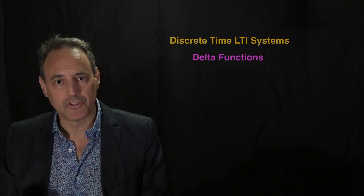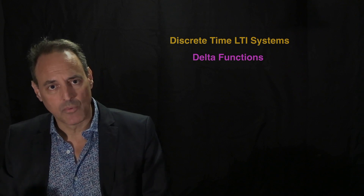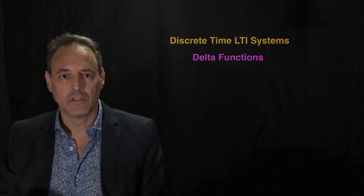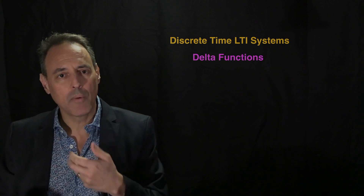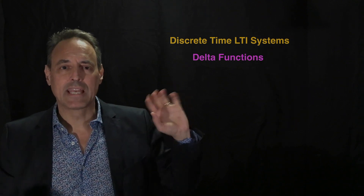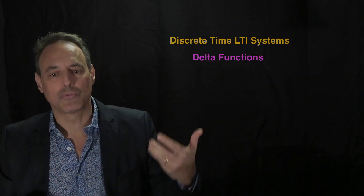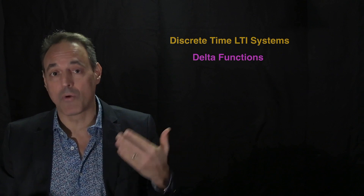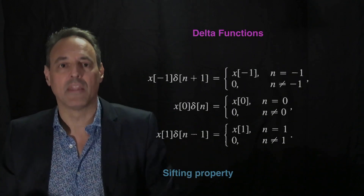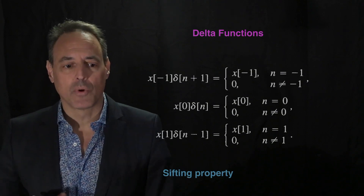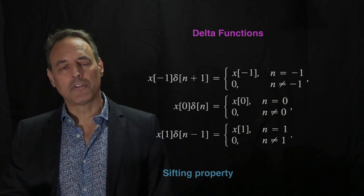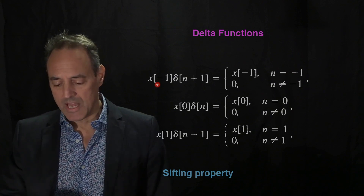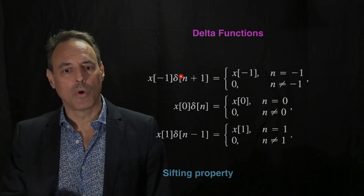Let's first talk about discrete time LTI systems. One of the things we want to first understand is the delta function. The delta function is a kick to the system, and the way we're going to construct all of our solutions is we're going to kick the system and look at its response. If the system is time invariant, it doesn't matter when I kick it — the response is the same — and then I'm going to build solutions out of that. The delta function has this interesting sifting property: if you take any function and multiply it by a delta function, it picks out the value wherever the argument is zero.